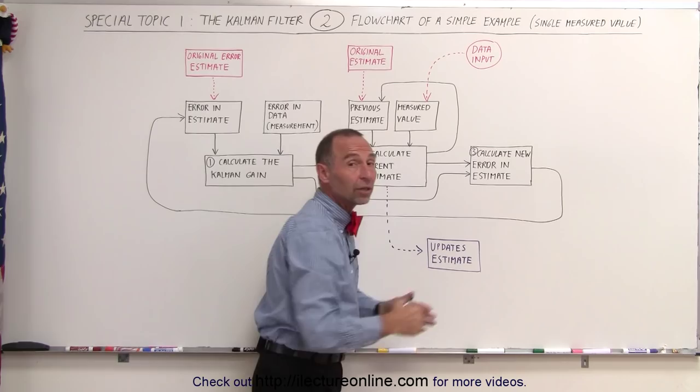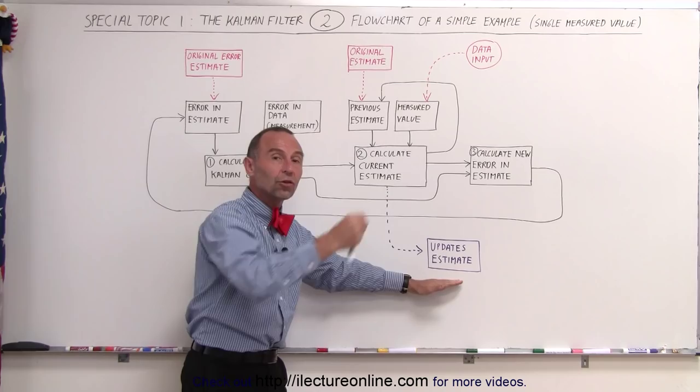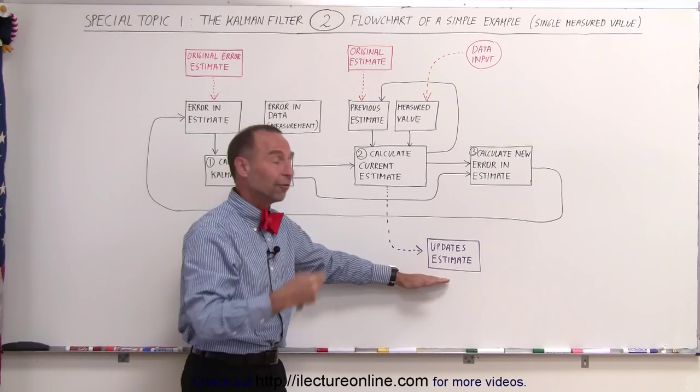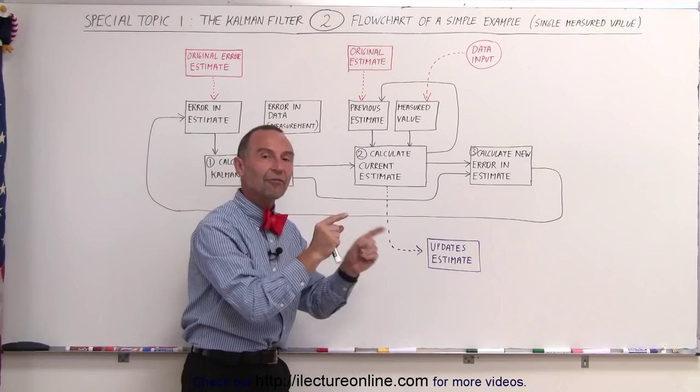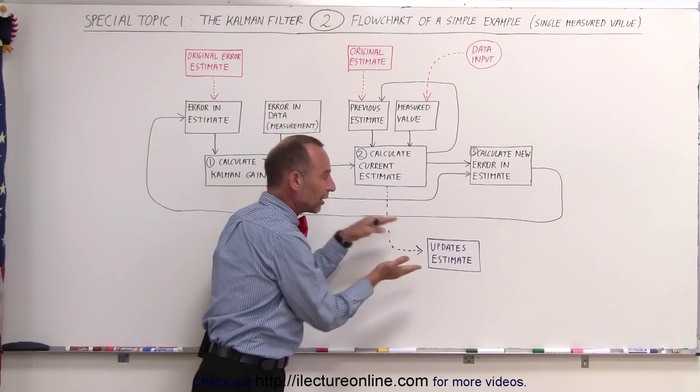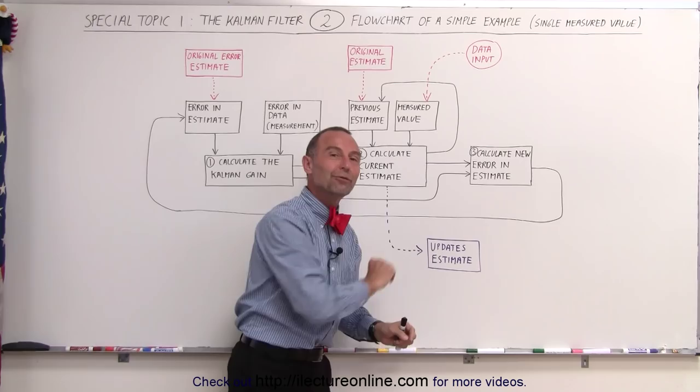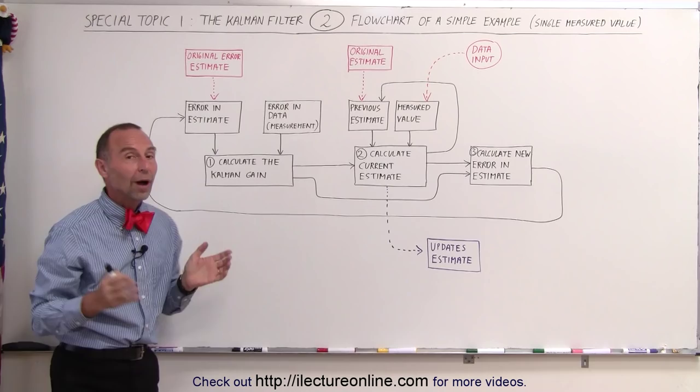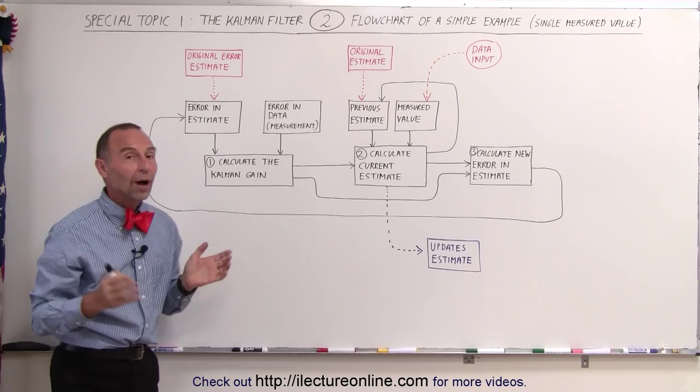Each time we go through the iterative process, a result comes out that gets used to update what we're looking for. If you want to track satellites, we get a better reading on where they are and how fast they're moving. If we're tracking a fighter jet and our radar tries to lock onto that plane, we get a better feel for where it is and how fast it's moving. If we're trying to get a better reading on temperature, the height of an object, or something similar, we get an updated estimate, and this keeps getting closer and closer to the true value. That's how the Kalman filter works — this diagram shows you the process, and once you understand it and then look at the equations, it becomes much easier to understand what the Kalman filter does.